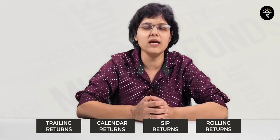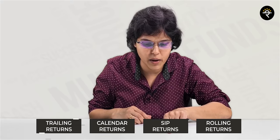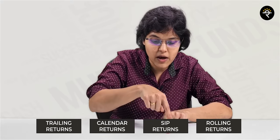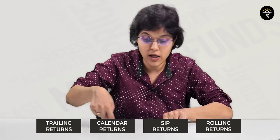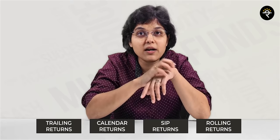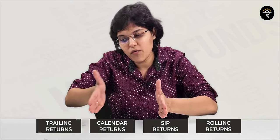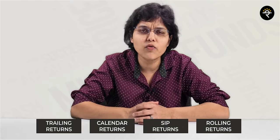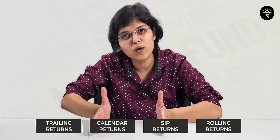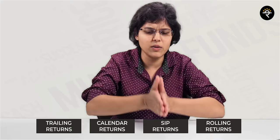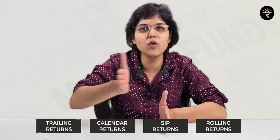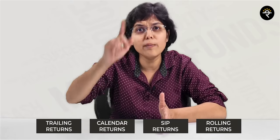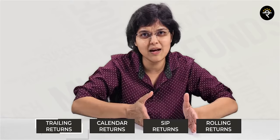The first one is a trailing return. Trailing return is nothing but a point-to-point return. For example, if I am at the end of October — 31st of October — I will check one year before that. So from 1st November of last year till 31st October of this year, how much return did the fund give? That is a trailing return. It need not be only from January to December; it can be from any single point to any single point.